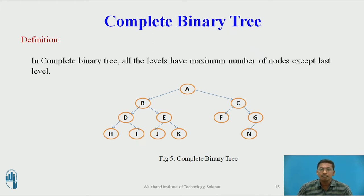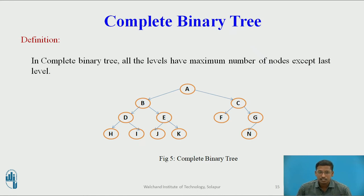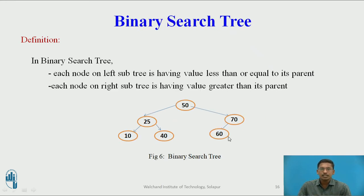Next definition is complete binary tree. In a complete binary tree, all levels have the maximum number of nodes except the last level. In a full binary tree all levels are filled with maximum nodes, while in a complete binary tree, except the last level, all levels are filled with maximum number of nodes. This is an example of a complete binary tree.